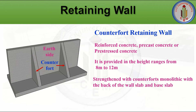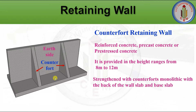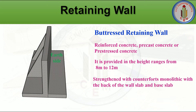When the wall height exceeds 8 meters — typically in the 8 to 12 meter range — a counter foot retaining wall is used. This is also constructed with reinforced concrete, precast concrete, or pre-stressed concrete. It is a type of cantilever wall strengthened with counter forts monolithic with the back of the wall slab and base. The area between counter forts is divided into two rectangular panels, with a heel slab and toe slab similar to a cantilever retaining wall.